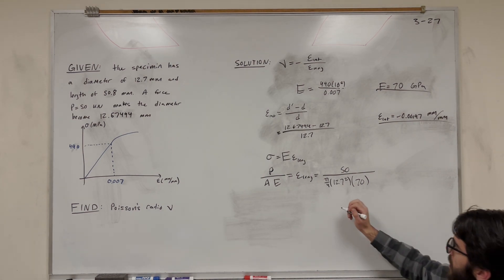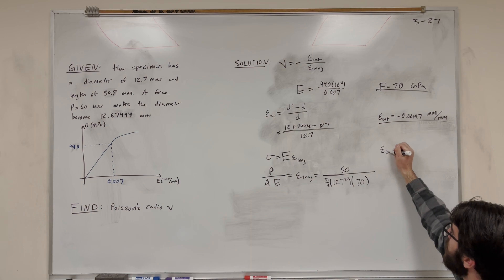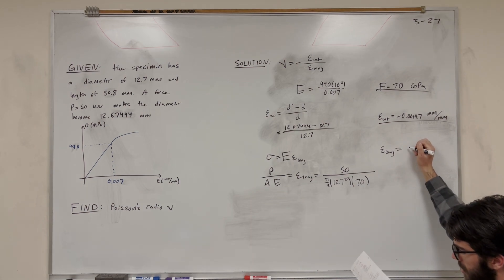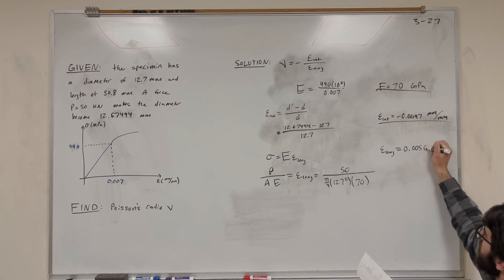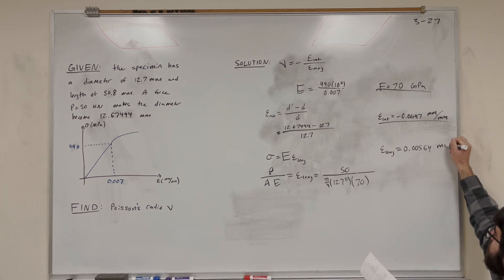So you're going to do this, and you're going to get that epsilon long is equal to 0.00564 millimeters per millimeter.